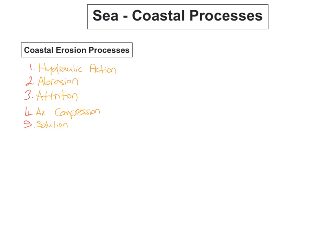These are exactly the same as river erosion processes but we'll go through them again. Hydraulic action is the force of the water crashing against the coastline — the force of the waves crashing against the coastline. Abrasion happens when rocks or pebbles are hurled against the coastline, which breaks rock off the coastline causing erosion.